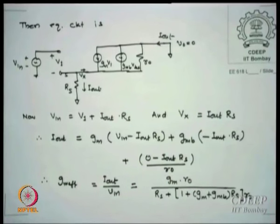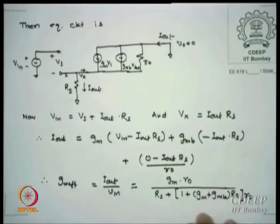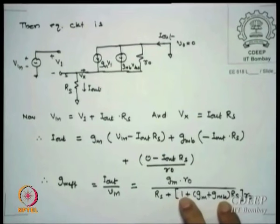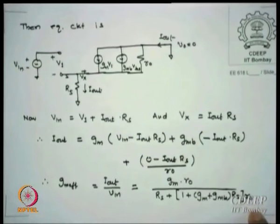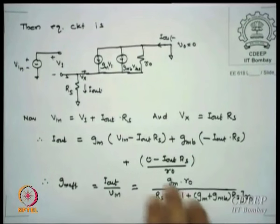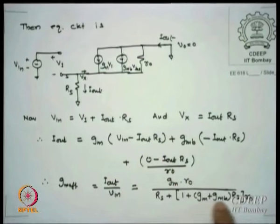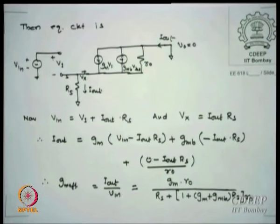The expression I get is Gm_effective = Gm·R0 / (Rs + 1 + (Gm + Gmb)·Rs·R0). Looking at the dominant terms: Gm + Gmb times Rs is larger than 1 when Rs is in kilo-ohms, so the denominator is approximately Gm·Rs·R0, giving Gm_effective ≈ 1/Rs. This means the design issue is: fix Gm by choosing Rs. The value of Rs is what I must decide in my design.